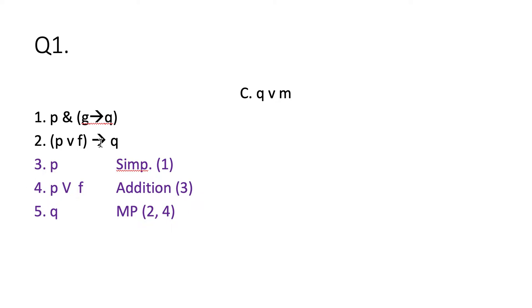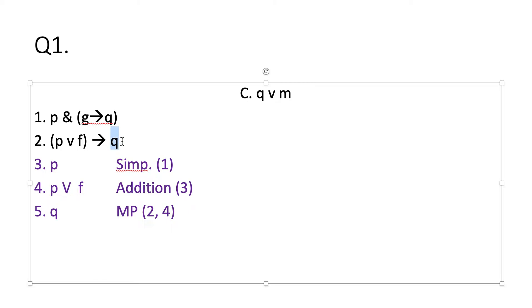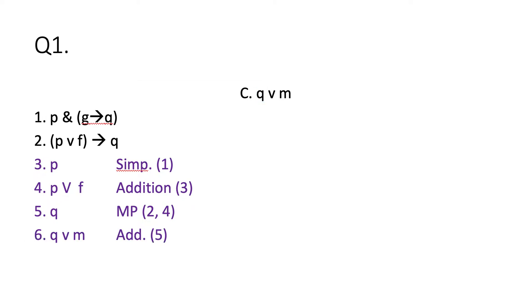That gives me the consequent of the conditional, Q, which is what I'm after. Now I'm just one step away from my conclusion. I've shown that Q follows from the truth of these two premises, so I can use the rule of addition to show that Q or M follows too — rule of addition on line five.